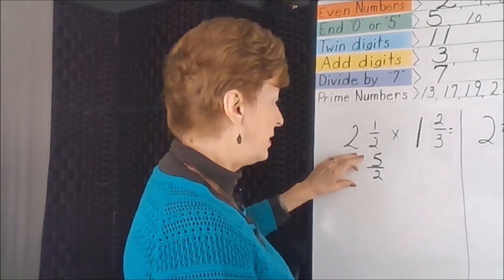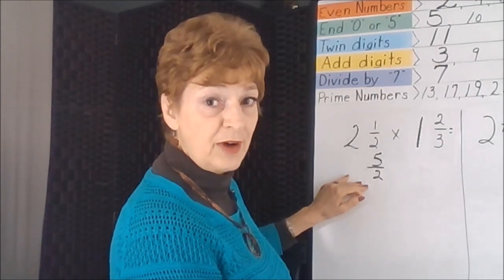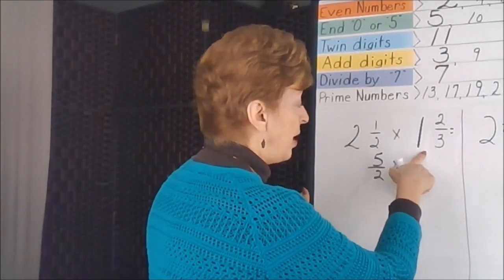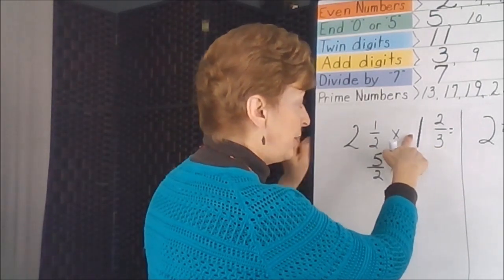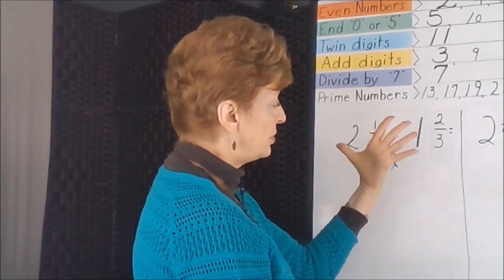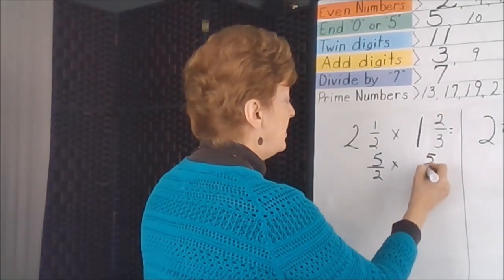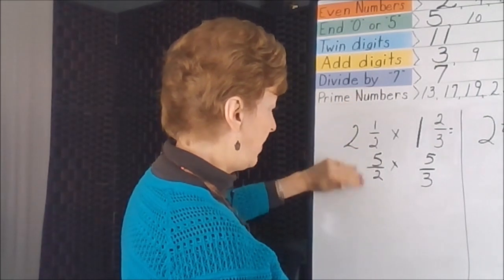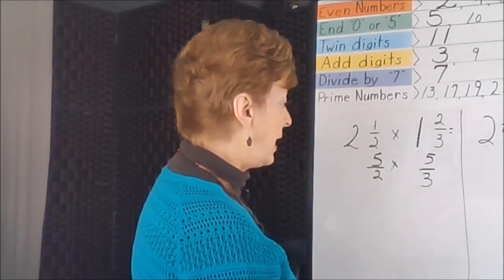This mixed number has successfully been changed to an improper fraction. Now we're going to change the next one into an improper fraction. Three times the whole number — we can get three thirds out of one whole thing, and we have two of another, so we have five thirds. This equation now has five halves and five thirds.